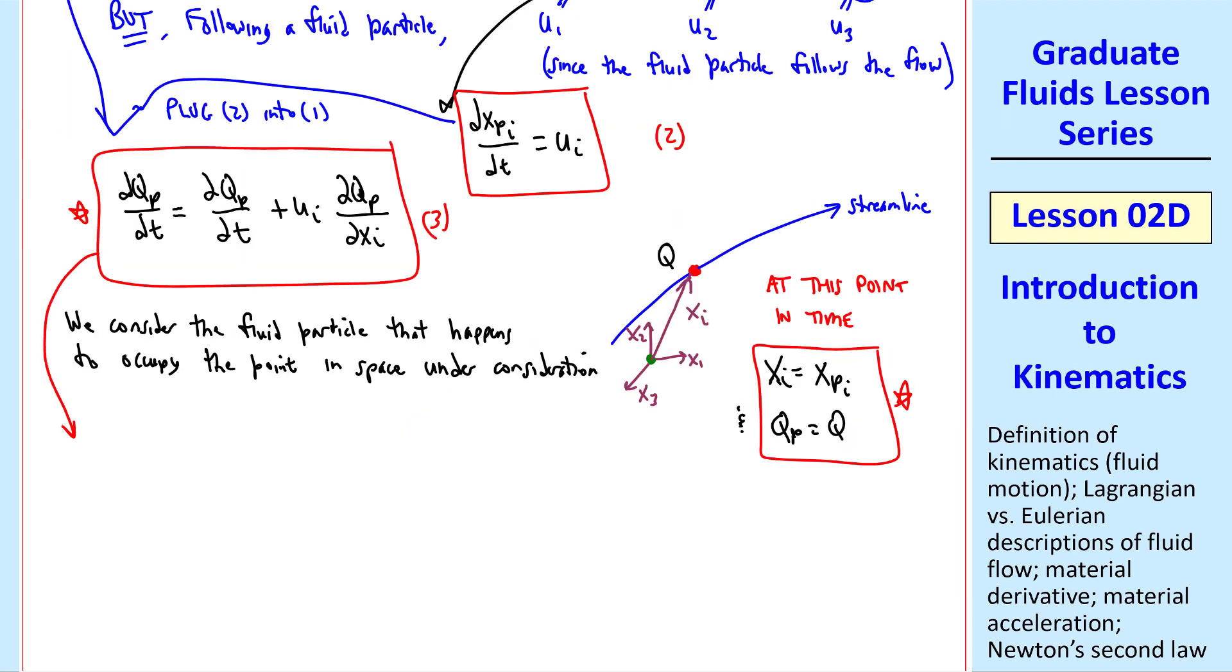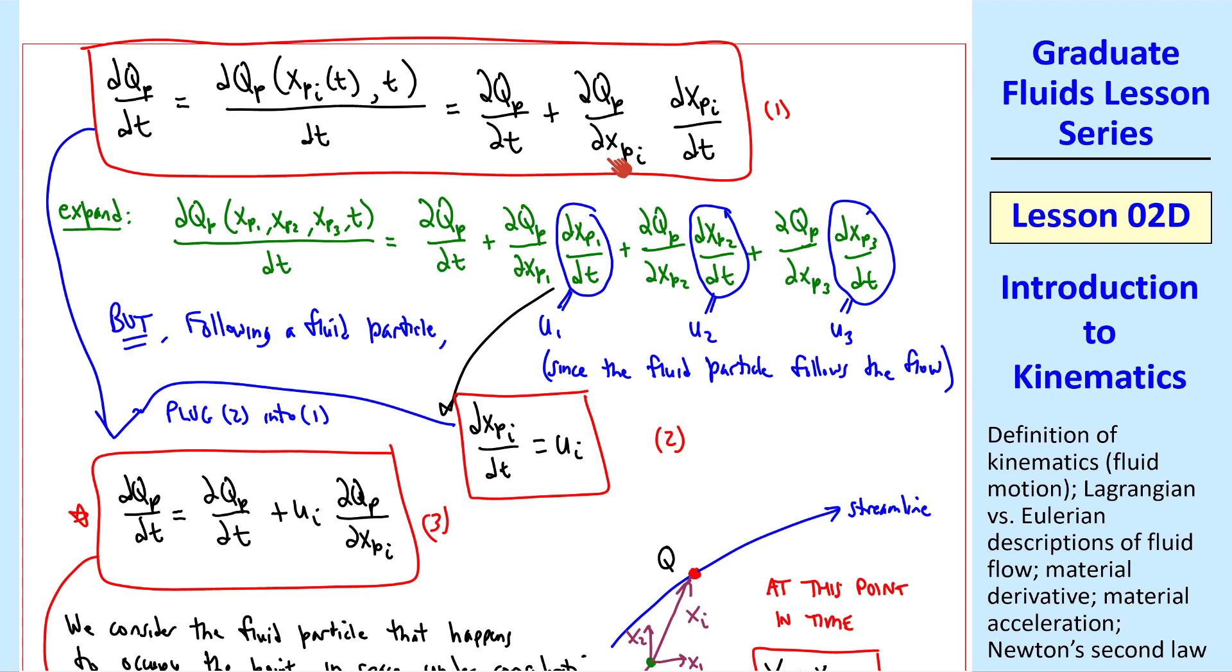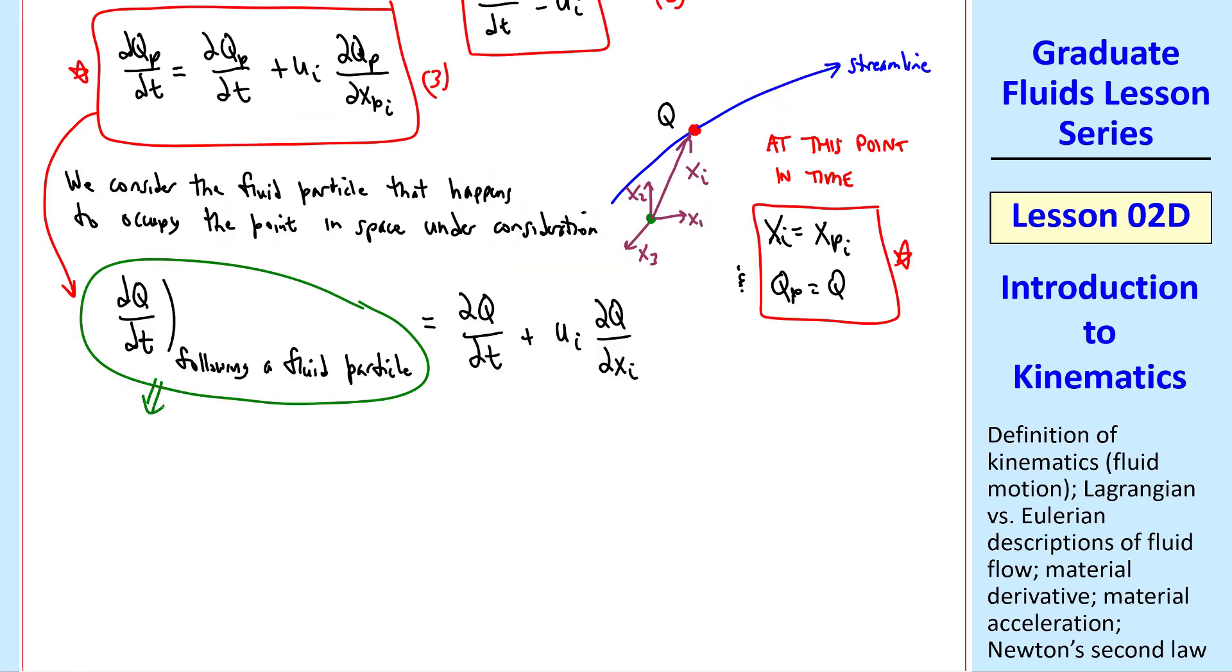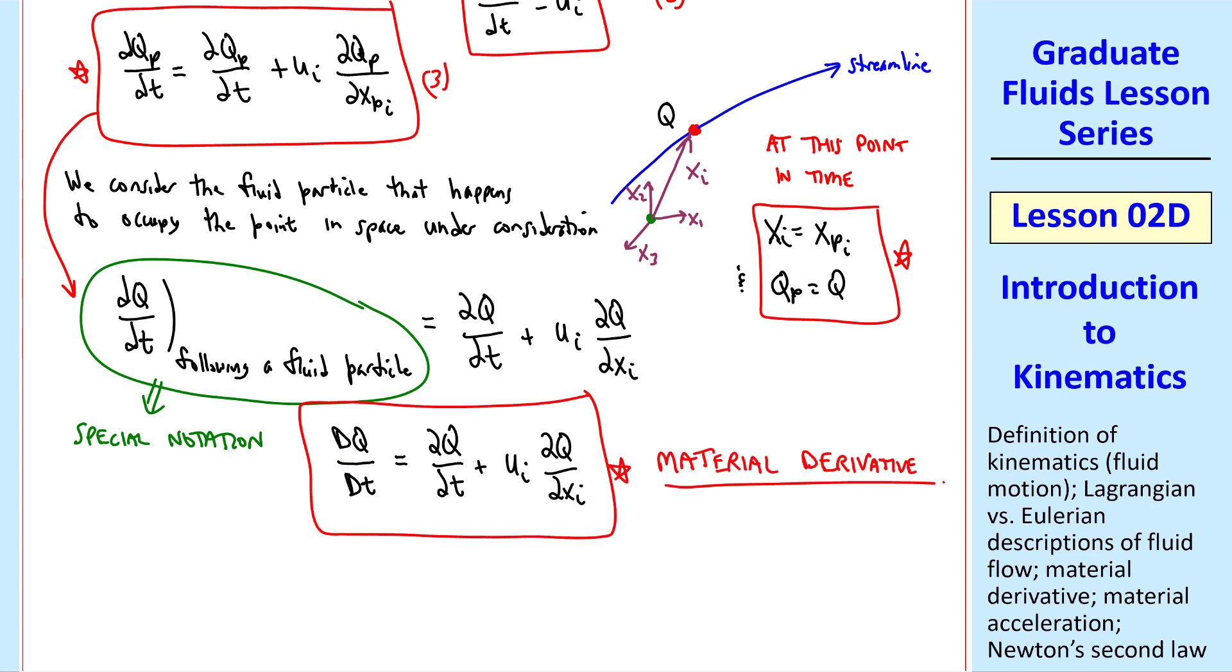Thus equation 3 becomes dq dt following a fluid particle equal del q del t plus ui del q del xi. And I just realized that I forgot my subscript p in equation 3 here, which was correct in equation 1. We give this derivative a special notation, namely capital Dq dt, where the words following a fluid particle are implied by this capital D. So this is our final equation for what we call the material derivative of q.